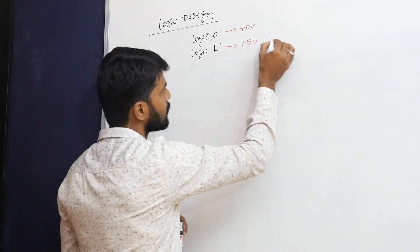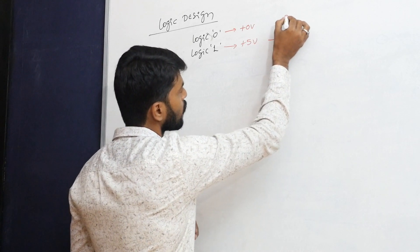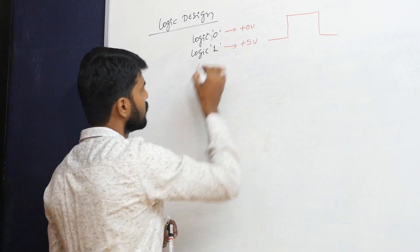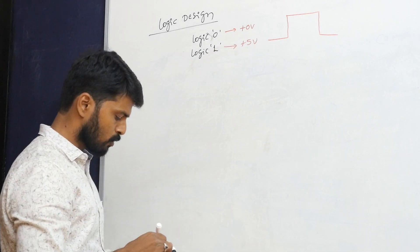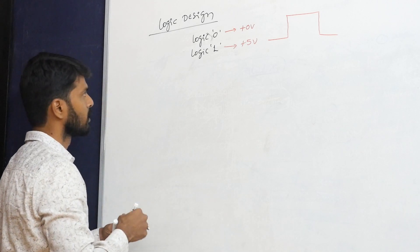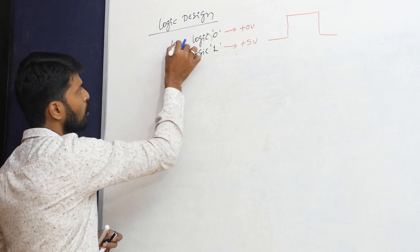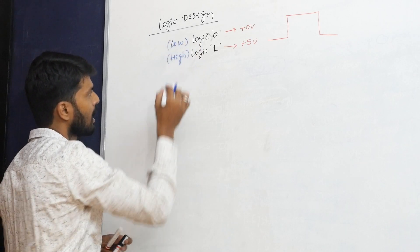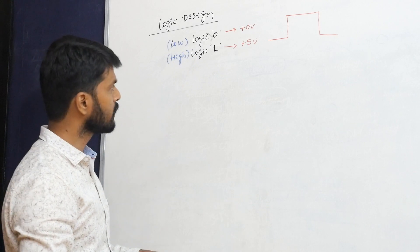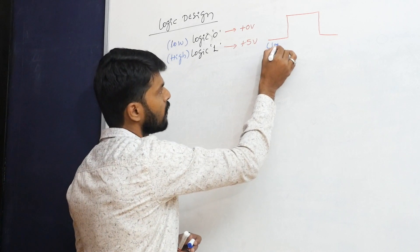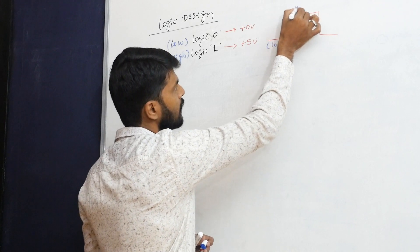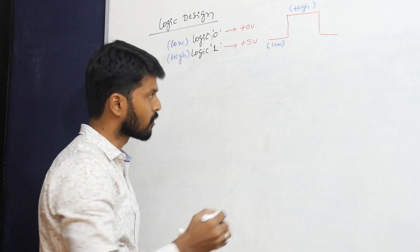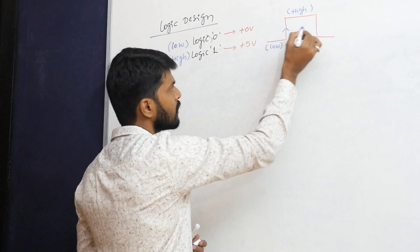If I draw a clock pulse, the low level of that pulse — logic zero — is called the logic low level. Logic one is called the logic high level. The transition from low to high is called the rising edge, and the transition from high to low is called the falling edge.